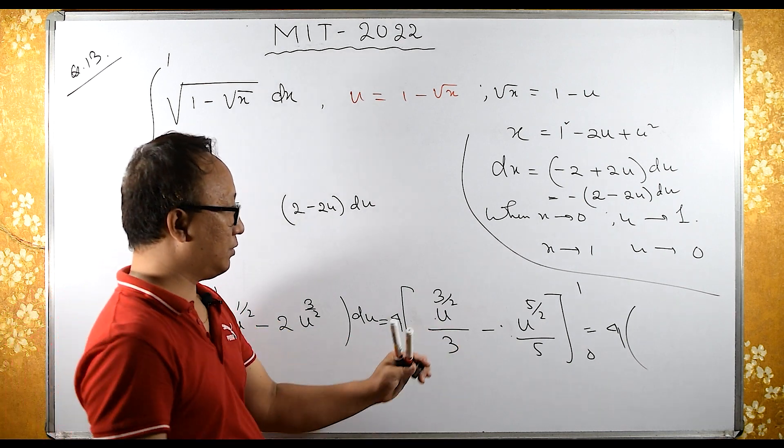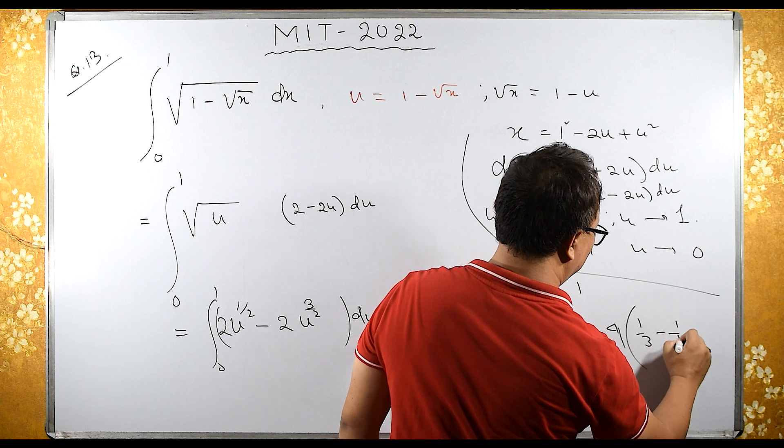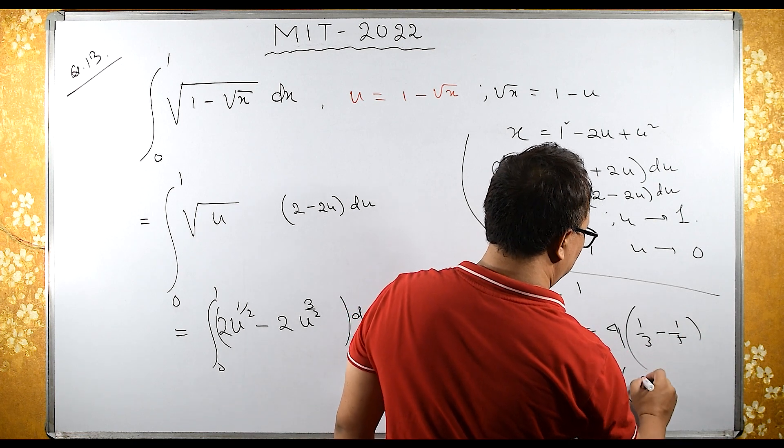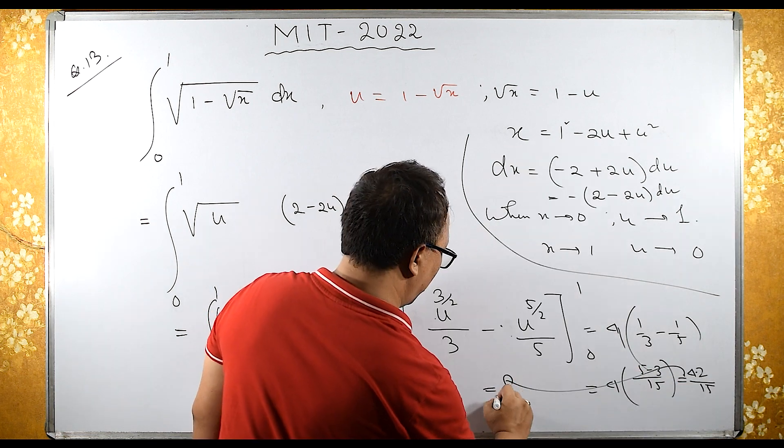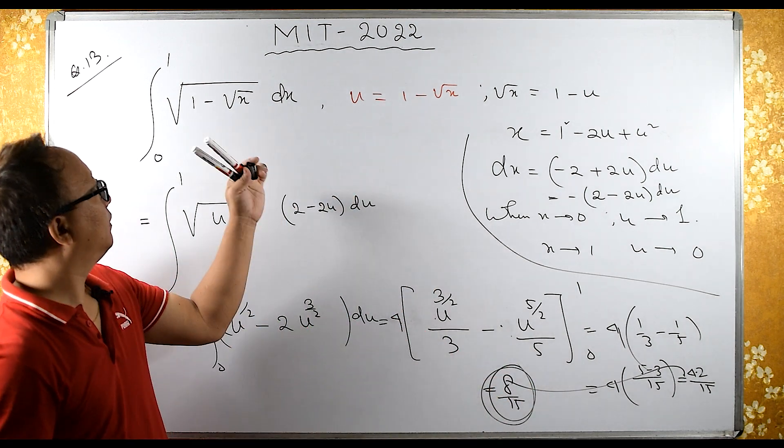Here 1/3 minus 1/5, with common denominator 15: (5 - 3)/15 = 2/15. So it's 4 times 2/15, which equals 8/15. This is the required answer.